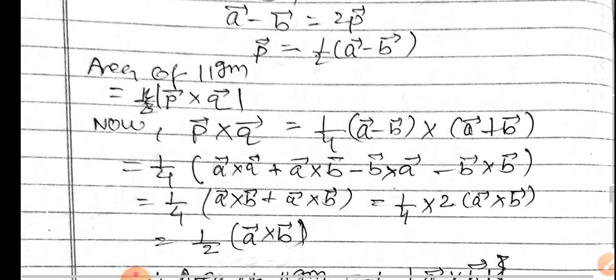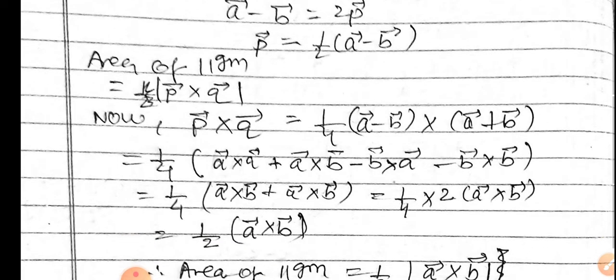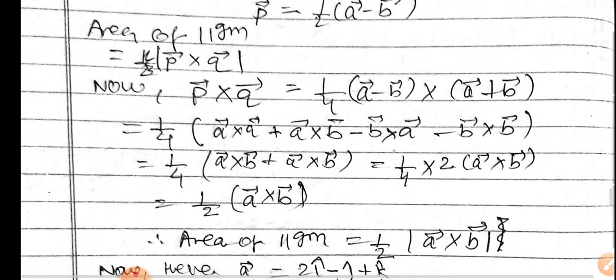Area of parallelogram equals 1/4 times 2a cross b.